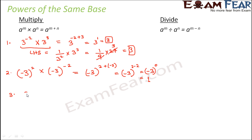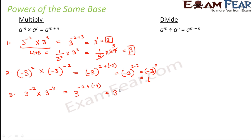One more example: 3 to the power minus 2 multiplied by 3 to the power minus 4. Here both powers are negative, but the logic remains the same. The exponents add: minus 2 plus minus 4 equals minus 6, so the answer is 3 to the power minus 6.